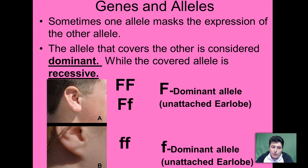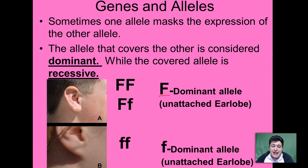Let's look at the trait for earlobes. This earlobe is what we call unattached, and this earlobe is called attached — notice how the skin here is attached to the face. Your earlobe type is controlled by two alternate forms of an allele. The dominant allele gives you the trait of unattached earlobes, whereas the recessive allele gives you attached earlobes. If you get both dominant alleles — one from your mom and one from your dad — then you're going to have unattached earlobes. You're pure for that trait; you only have alleles for unattached earlobes.